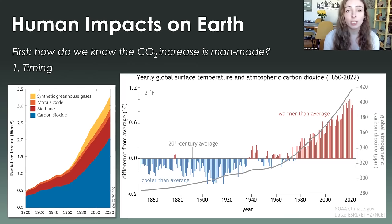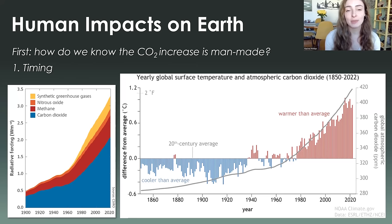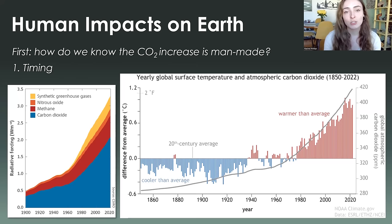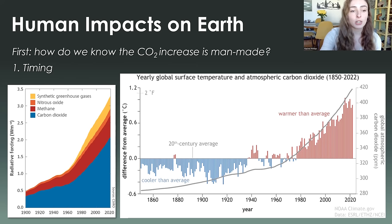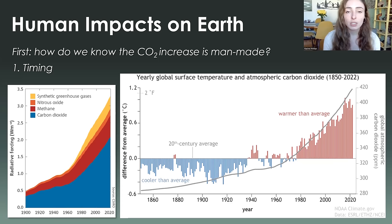How do we know that the carbon increase is due to us? One way is timing. Obviously, correlation is not causation, and there are many other pieces of evidence I will go through. But if we look at the time scale of pre-industrial versus post-industrial times and years throughout Earth's history, just how much more carbon and carbon compounds — not just carbon compounds, but nitrous oxide and other greenhouse gases as well — are present in the atmosphere is pretty obvious.